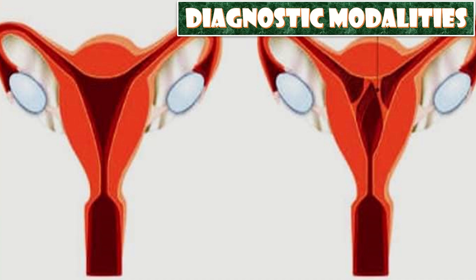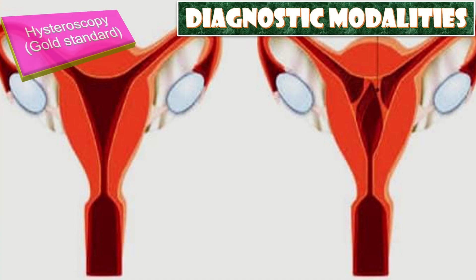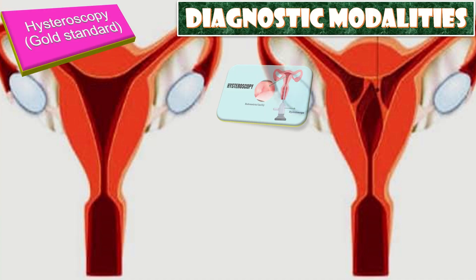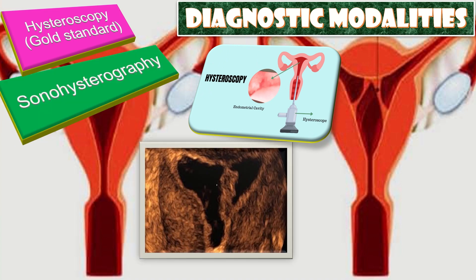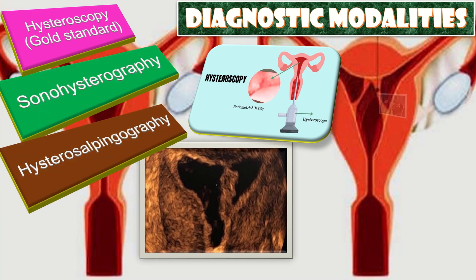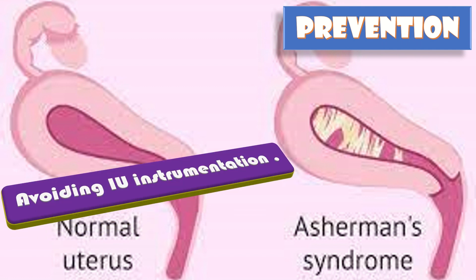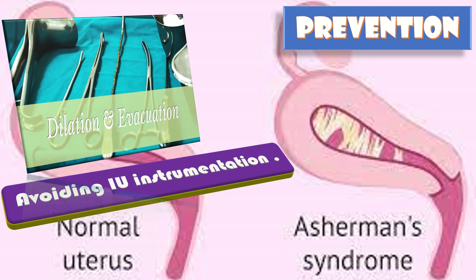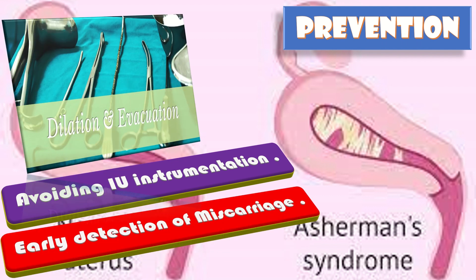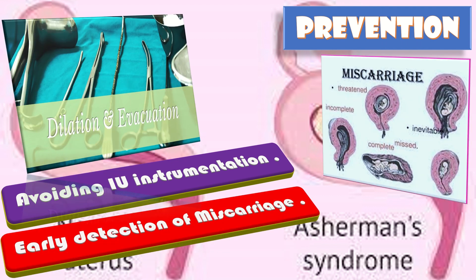The diagnostic modalities include hysteroscopy, which is the gold standard, sonohysterography, hysterosalpingography, and MRI. In order to prevent adhesion formation, we need to avoid intrauterine instrumentation — preferably using the medical method like mifepristone for termination of pregnancy. Another step is early detection of miscarriage and immediate evacuation followed by fetal demise.